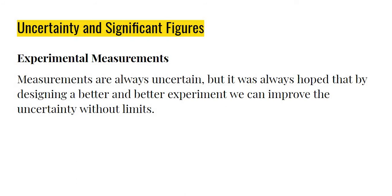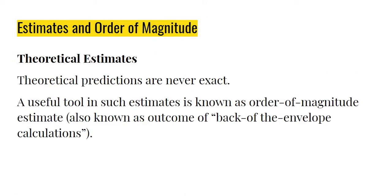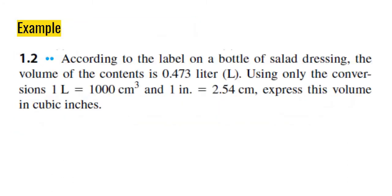Experimental measurements. It is always uncertain. But it was always hoped that by designing a better experiment, we can improve the uncertainty without limits. Theoretical estimates. As the word itself says, estimates. It is just a theoretical prediction, which are never exact. A useful tool in such estimates is known as order of magnitude estimate, or also known as outcome of back-of-the-envelope calculations.